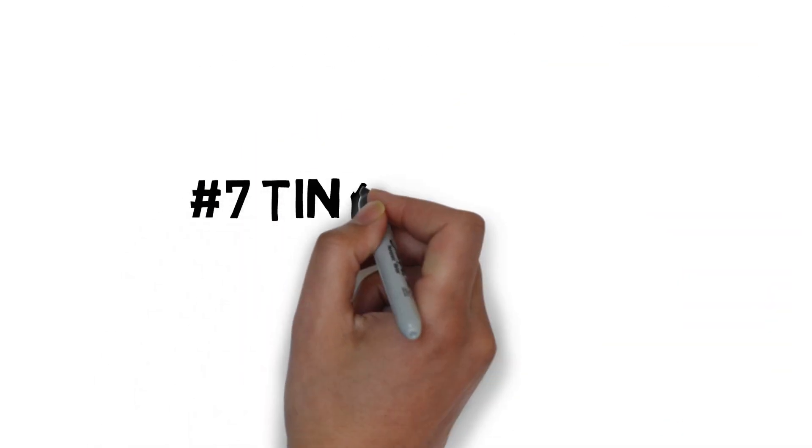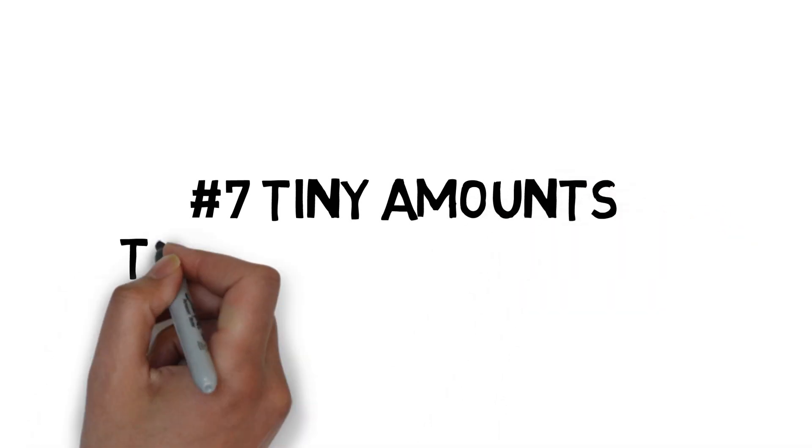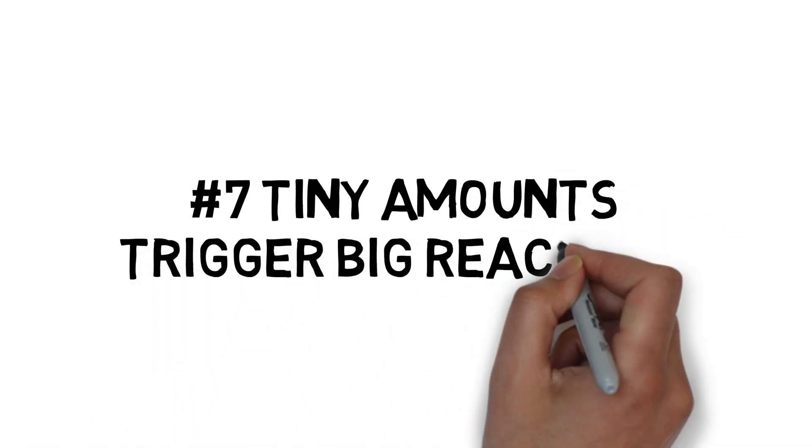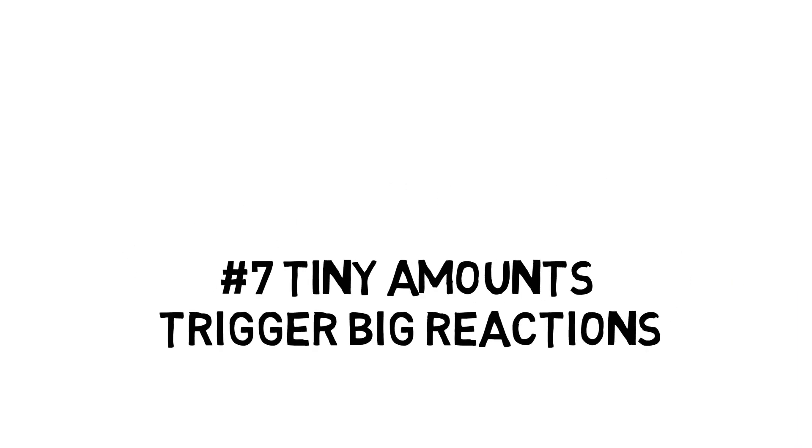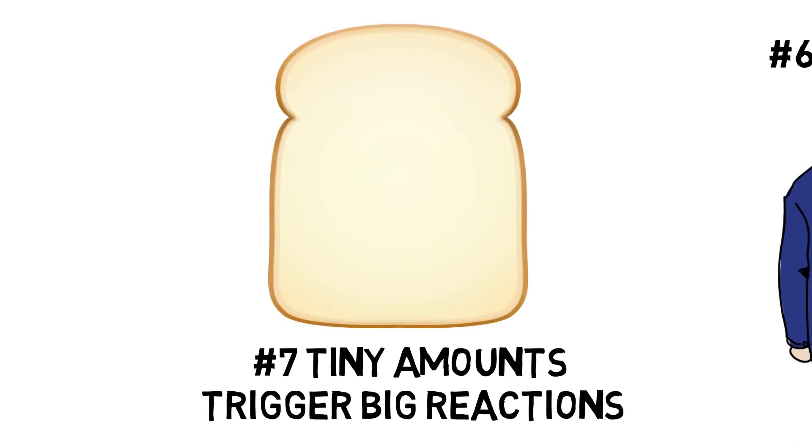Number 7. Even small amounts of gluten can lead to serious reactions. Exposure to as little as 30 mg of gluten, which is about 2% of a slice of bread, can trigger serious damage to the intestines.